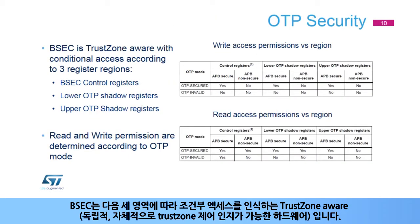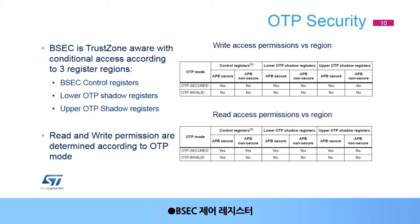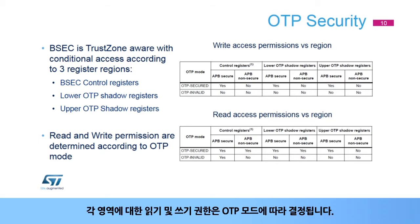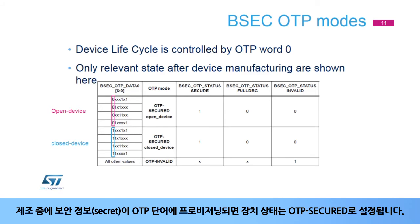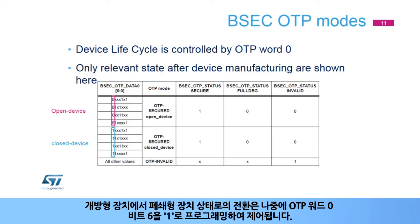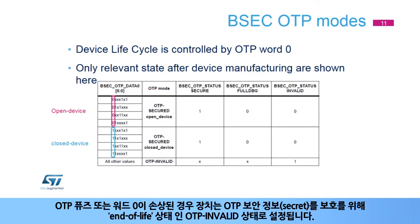BSEC is TrustZone-aware with conditional access according to three regions: BSEC control registers, lower OTP shadow registers, and upper OTP shadow registers. For each region, read and write permissions are determined according to the OTP mode. The table shows a simplified view of the device lifecycle. Once the secret is provisioned into the OTP words during manufacturing, the device state is set to OTP secured. The transition from open device to closed device state is controlled by programming OTP word 0 bit 6 to 1. In case OTP fuse word 0 is compromised, the device is set into OTP invalid state, which is an end-of-life state protecting OTP secrets.